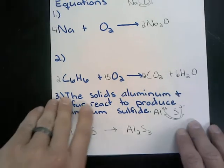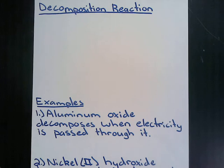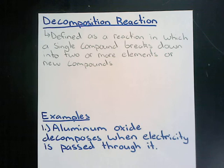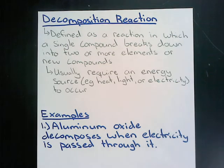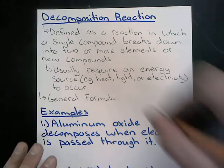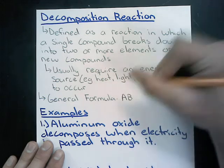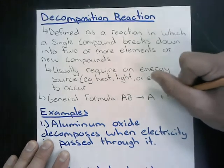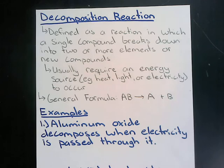Now we move to our third type of reaction: a decomposition reaction. A decomposition reaction is defined as a reaction in which a single compound breaks down into two or more elements or compounds. Decomposition reactions often require an energy source such as heat, light, or electricity. The generalized formula is AB → A + B.